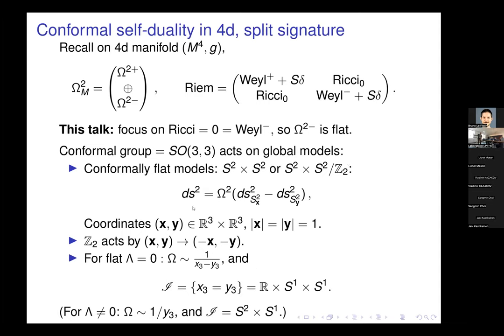In the flat case if you look at a flat metric, it goes like one over (x3 minus y3) squared with certain choices of conformal factor, which tells you that null infinity is at the set where x3 equals y3. You can see that you're getting R cross S1 cross S1 inside S2 cross S2 for this scry.